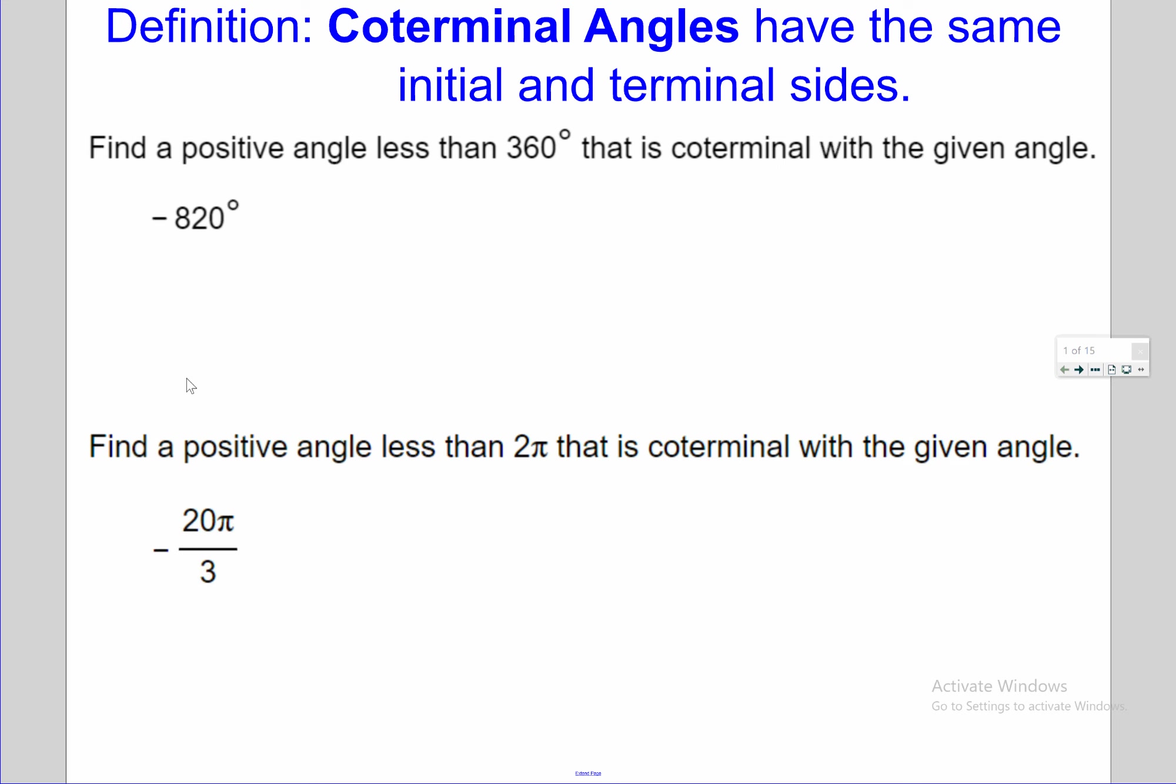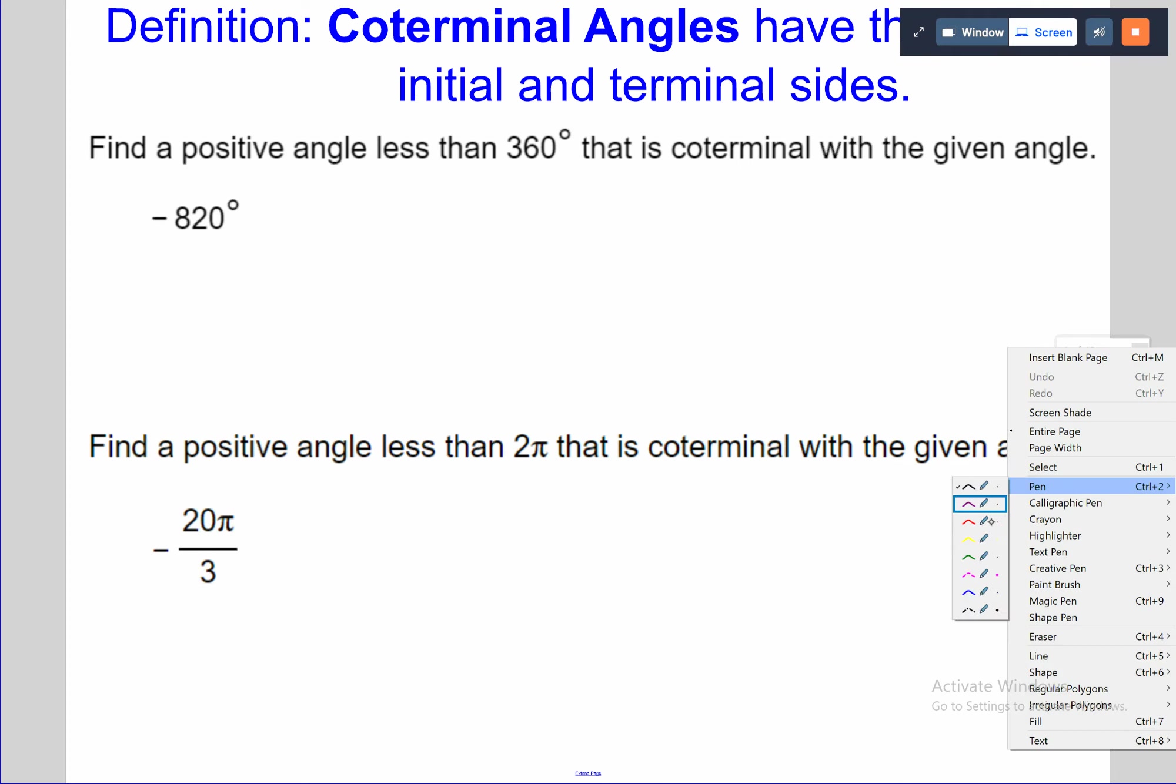You're going to see some problems like this. It says find a positive angle less than 360 degrees that is coterminal with the given angle. So we're starting with negative 820. We're looking for a positive angle that looks the same, but it's one or two or more rotations away. All you need to do for this is keep adding or subtracting full rotations until you get the number that you're looking for. We're going to keep adding 360, a full rotation.